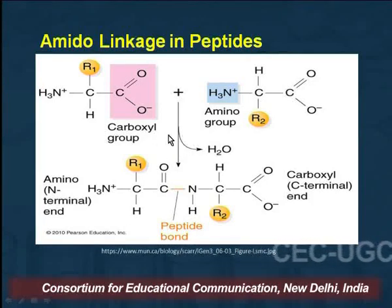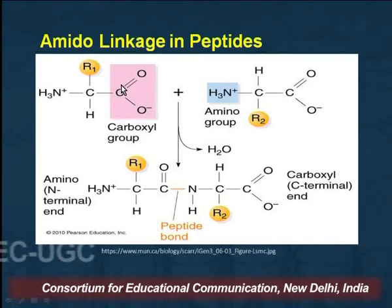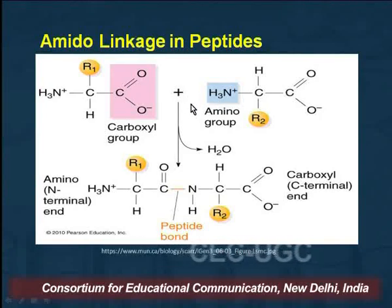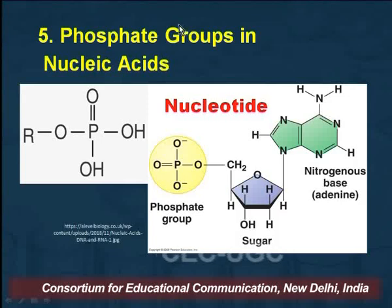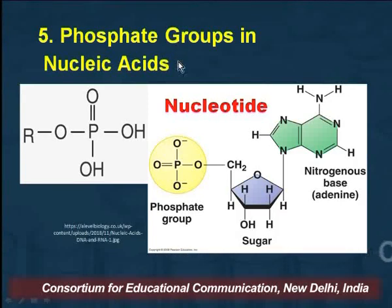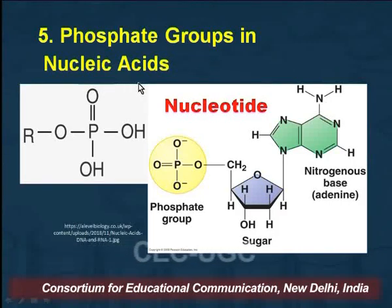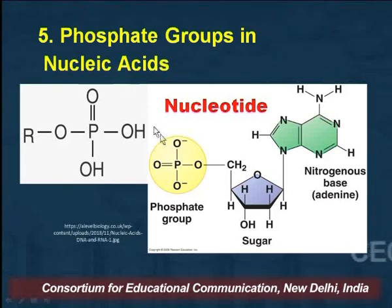In this dipeptide, the carboxylic group of the first amino acid is reacting with the amino group of the second amino acid, resulting in the formation of a peptide bond. Phosphate groups are not only present in phospholipids — they are also present in nucleic acids, which can be DNA or RNA.